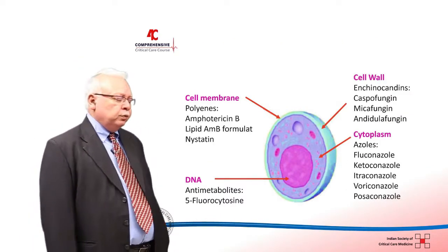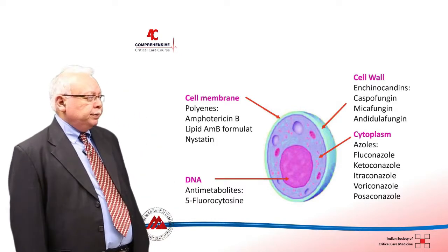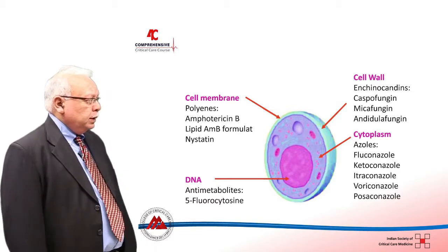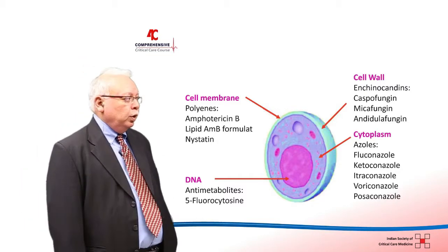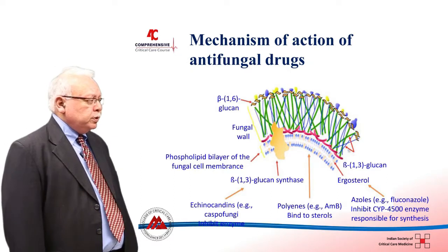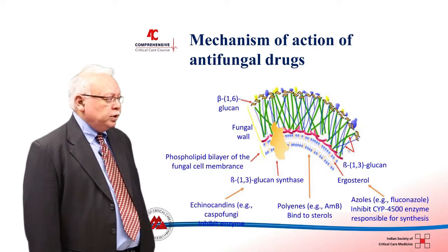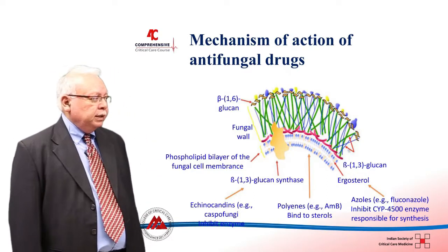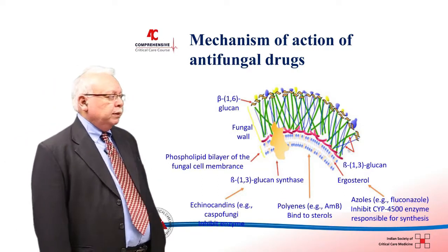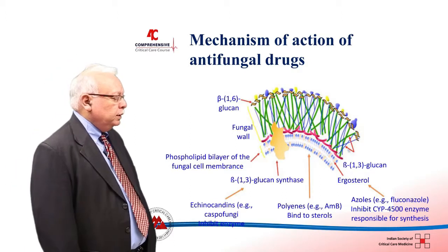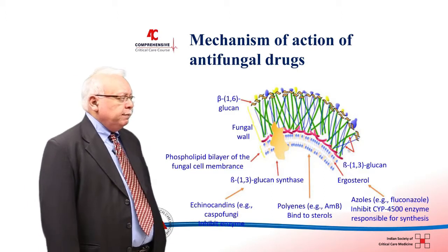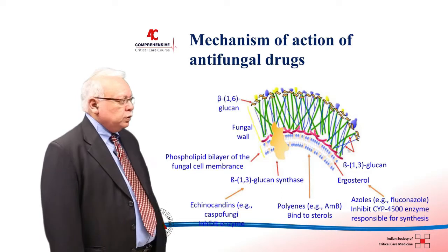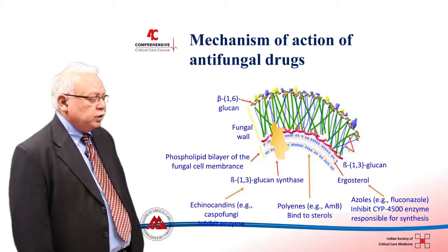These different antifungal agents work at different sites of a fungus. For example, 5-fluorocytosine, an anti-metabolite, works at the DNA. The azoles work at the cytoplasm, inhibiting the cytochrome P450 enzyme responsible for synthesis of ergosterol. The polyenes work at the cell membrane, binding directly to ergosterol and causing holes with complete disruption of permeability. The echinocandins work at the cell wall, binding to the beta-1,3-glucan synthase enzyme and disrupting synthesis of the fungal cell wall.